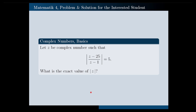Hello, in this video I'm going to solve the following problem for you. This is a problem on the topic of complex numbers basics. Let z be a complex number such that the absolute value of (z minus 25) all over (z minus 1) is equal to 5. What is the exact value of the absolute value of z? It would be a good idea if you pause the video at this point and try to solve the problem yourself first.